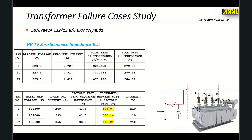For the HV to tertiary zero sequence impedance test, we first short the three phases on the HV star side and connect them to one phase of the source, and the neutral to the second phase or the neutral of the source. For the tertiary, there is no need to short it because it is delta connected.